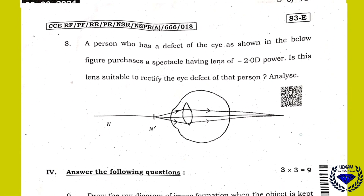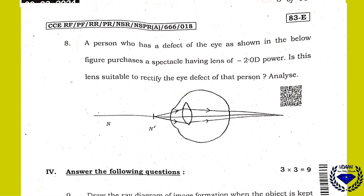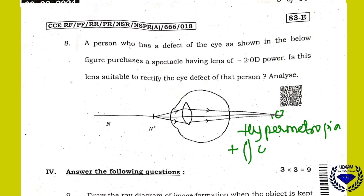Question number 8: a person has an eye defect shown in the figure and purchases spectacles with a lens of minus 2.0 diopter power. Is this lens suitable to rectify the defect? This defect is hypermetropia — a condition where a person can see far objects clearly but cannot see near objects distinctly; the image is formed behind the retina. The corrective lens for hypermetropia is a convex lens, that is a positive lens. So the answer is no — a person with this defect cannot use minus 2D.